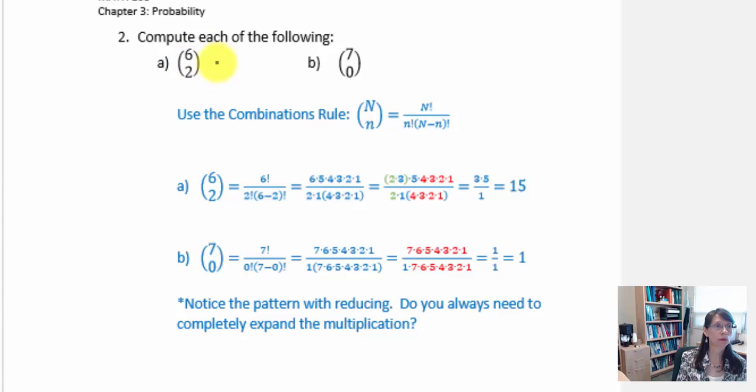So capital N is equal to 6 while the lowercase n equals 2. The combinations rule is given here. Capital N factorial is divided by our lower case n factorial multiplied by capital N minus n factorial.